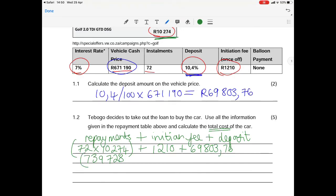If we add all of this up together, our total repayments amount is R739,728. If we add all of that up together we will get a total cost of the car of R810,741.76.